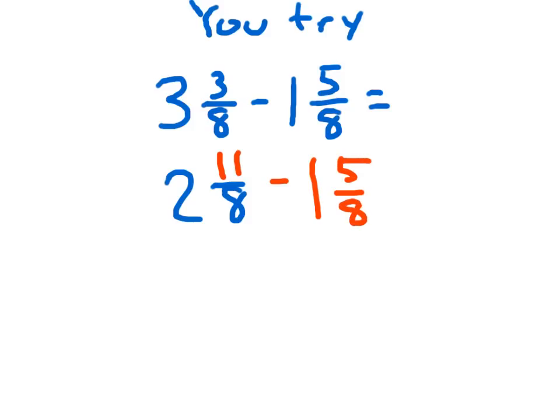And I have my rest of my problem there. Again, starting with the wholes, two minus one is one, eleven minus five is six, and then so I have one and six-eighths.